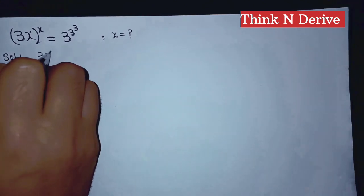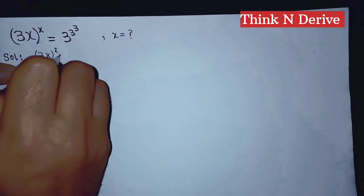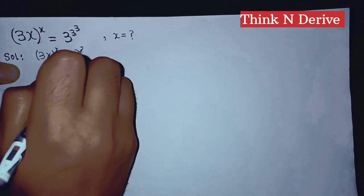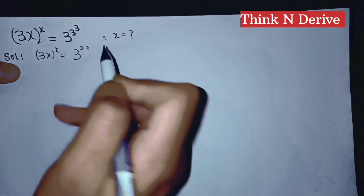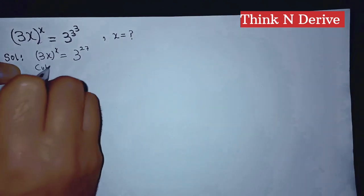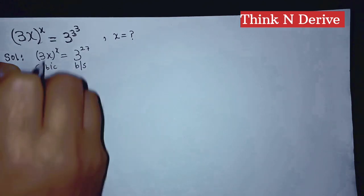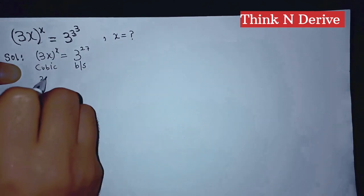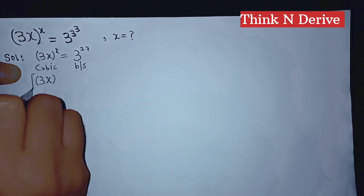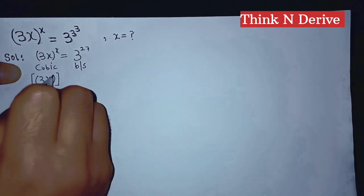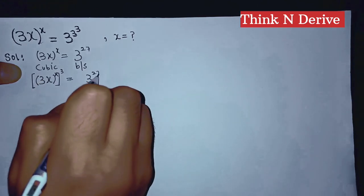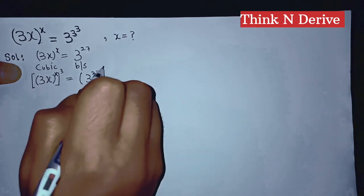This is 3 to the power x to the power x equal to 3 to the power 3 to the power 3, which can be written as 3 to the power 27, because 3 to the power 3 is 3 into 3 into 3, that's 27. Now cubing both sides, we have 3x to the power x to the power 3 equal to 3 to the power 27 to the power 3.